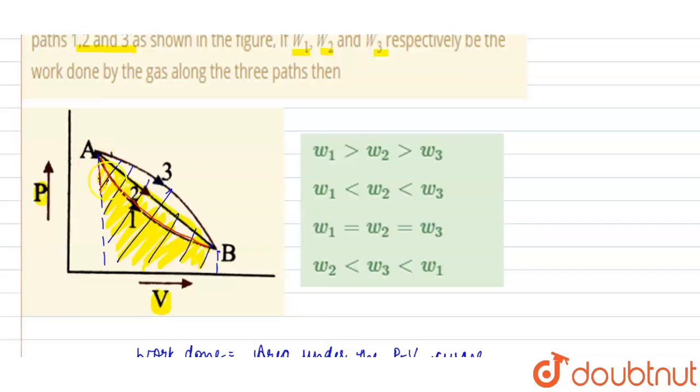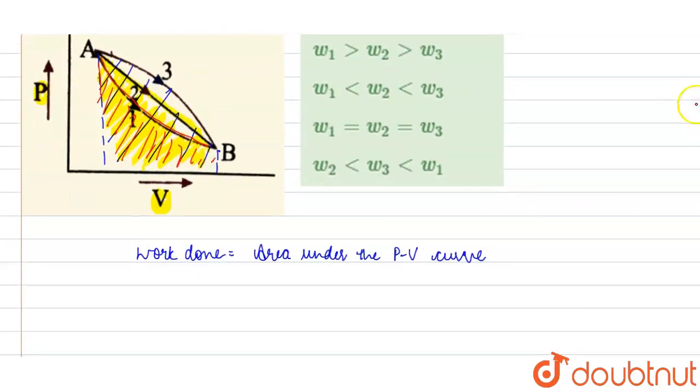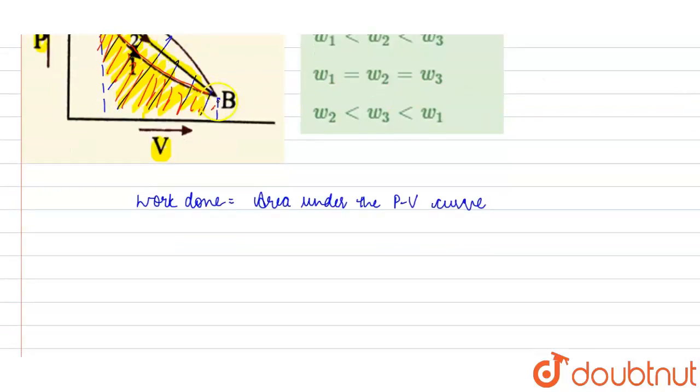And the first curve encloses much lesser area than the third and second. So, the area swept by curve 3 is greater than the area swept by curve 2 and curve 1.